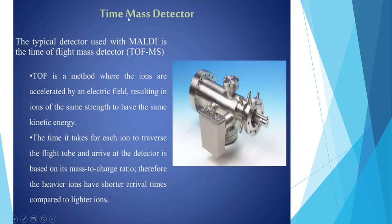The typical detector used with MALDI is the time mass detector, a method where the ions are accelerated by an electric field resulting in ions of the same kinetic energy. The time it takes for each ion to traverse the flight tube and arrive at the detector is based on its mass-to-charge ratio. Therefore, heavier ions have longer arrival times compared to lighter ones.